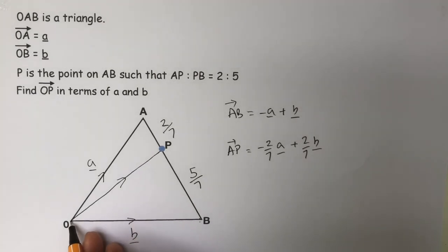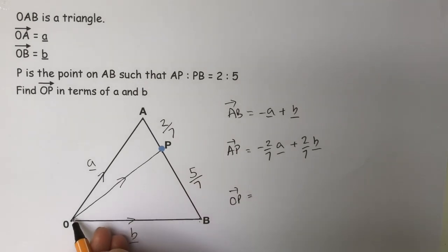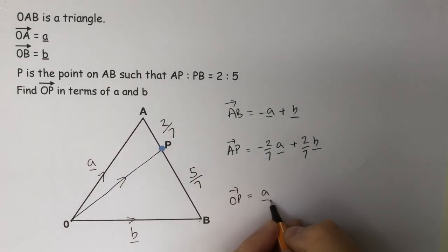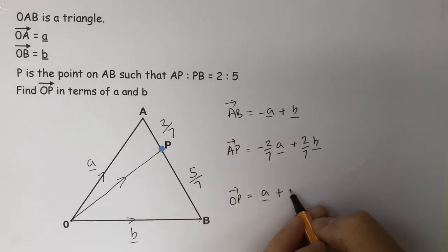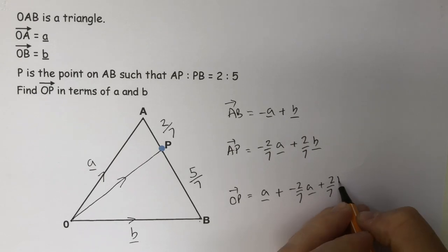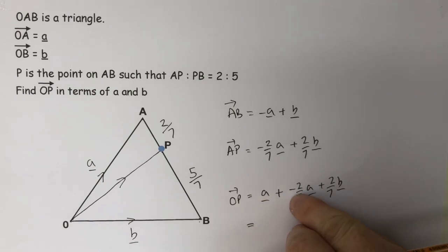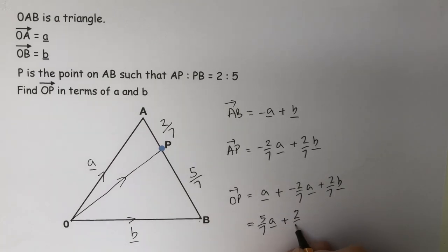That enables us to work out from O to P. O to P is equivalent to going from O to A, which is a, followed by A to P, which is minus two sevenths of a plus two sevenths of b. Tidying up the algebra: one a minus two sevenths a gives us five sevenths a, plus two sevenths b. That completes the solution.